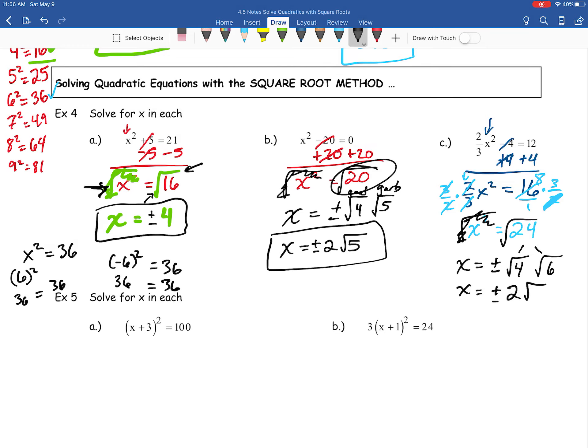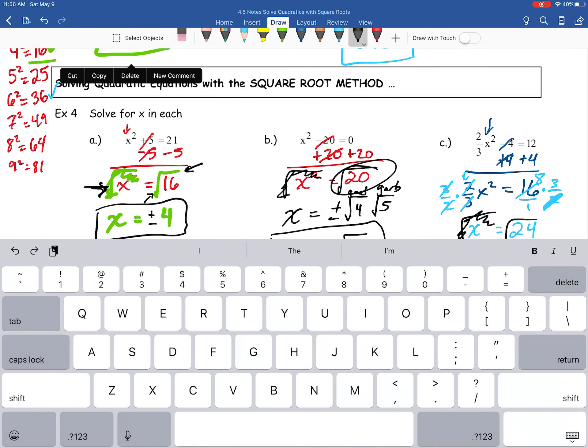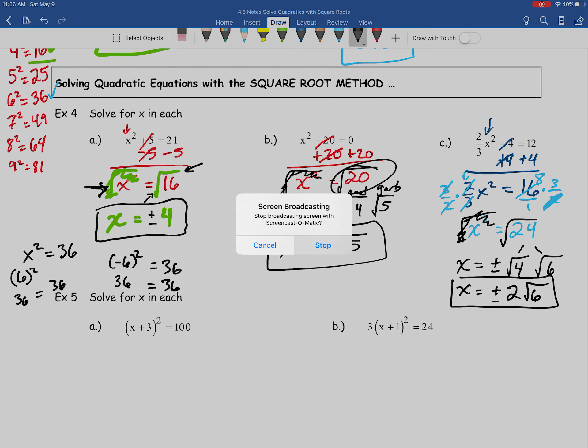Now, simplifying this even further, we end up with X equals plus or minus the square root of four, which is two, and then the garbage just drops. So this would be our solution for again, example 4C from our 4.5 set of notes.